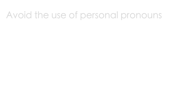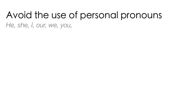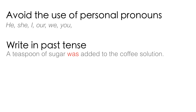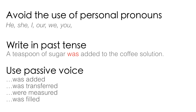The language in your method should be exactly the same as everything else in the paper. There are three guidelines to help force you to write in the correct language. First, avoid the use of any personal pronouns — words that refer to a person: he, she, I, our, we, and you. Second, write in past tense, as these steps have already taken place. For example, instead of writing 'add a teaspoon of sugar to coffee,' write it as 'a teaspoon of sugar was added to the coffee.'